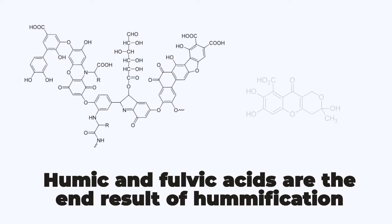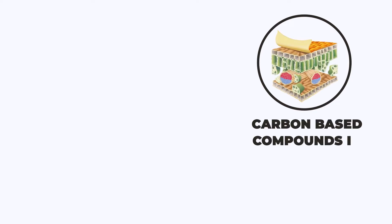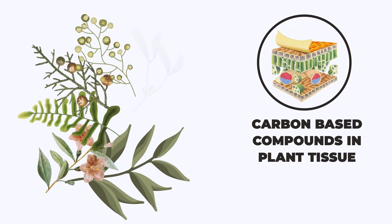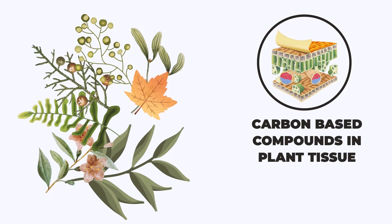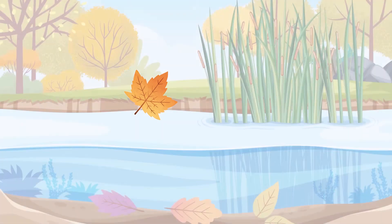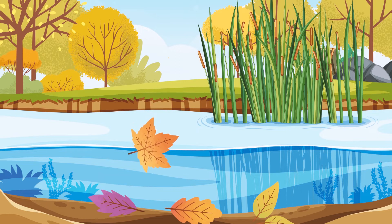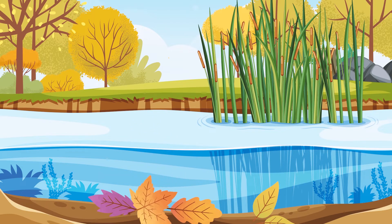Humic and fulvic acids are the end result of humification. Our natural environment contains carbon-based compounds from plant and animal matter that is recycled by decomposition. Trees, broken limbs, shrubs, and leaves fall to the forest floor, or they are swept into wetlands, bogs, streams, and lakes.